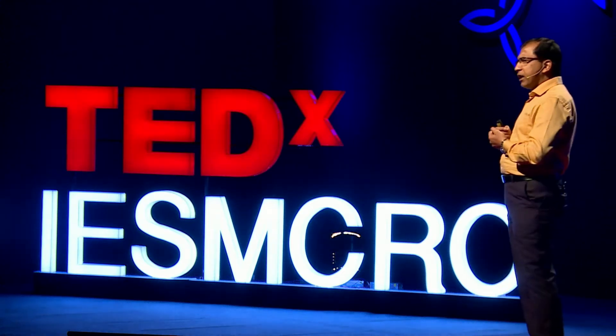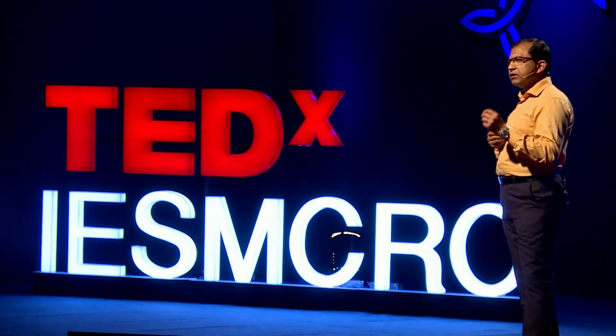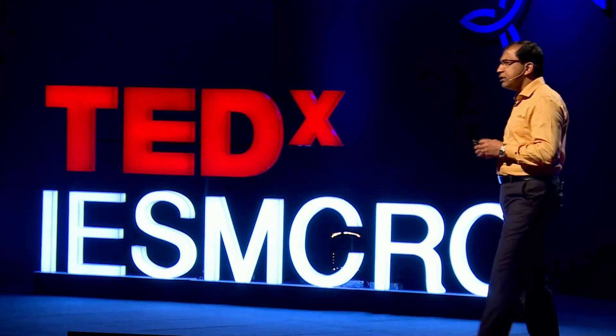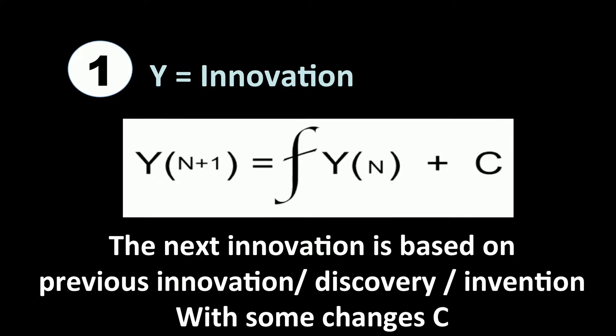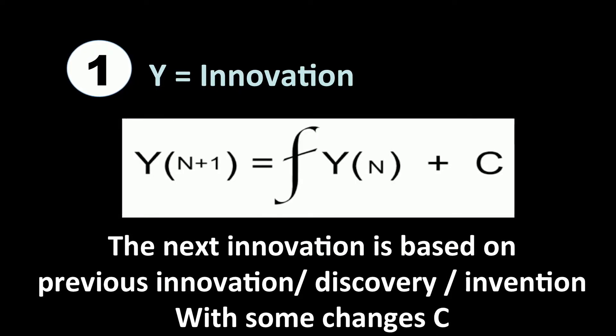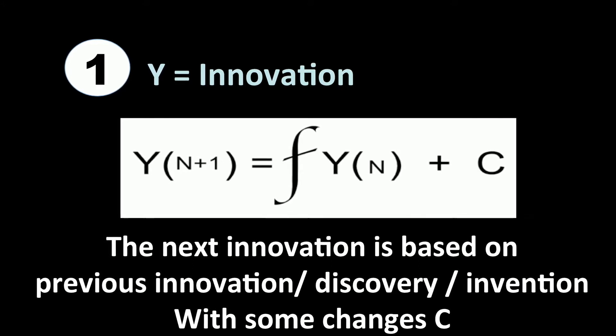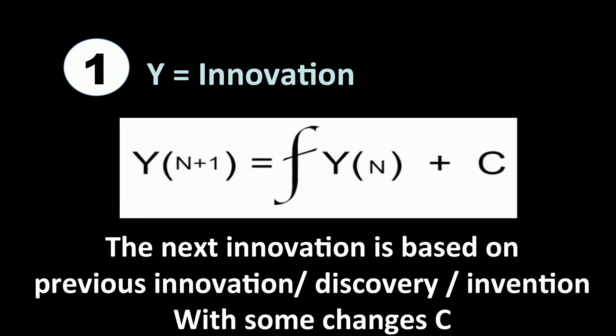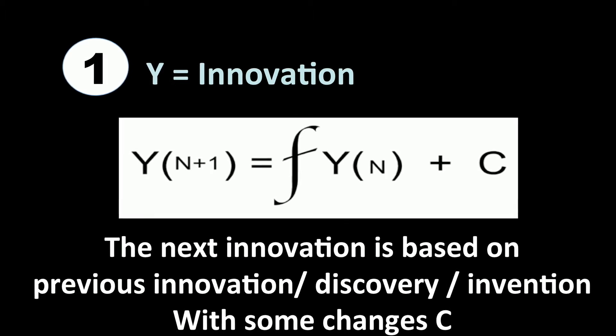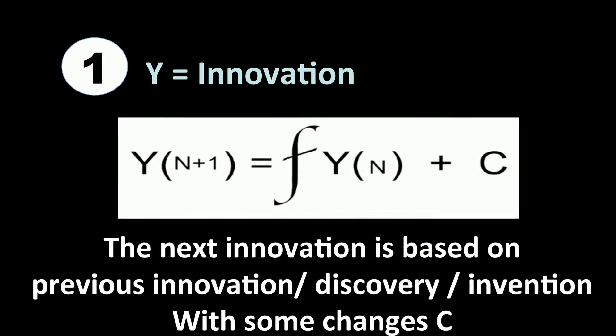Every study I found talks about the fact that innovation doesn't happen in isolation. It is always linked with something that happened before — some invention, some discovery, some intervention, and some change C. So if Y is innovation, we can say Y(N+1), which is the next innovation, is a function of something that happened in the past: Y(N) + C.